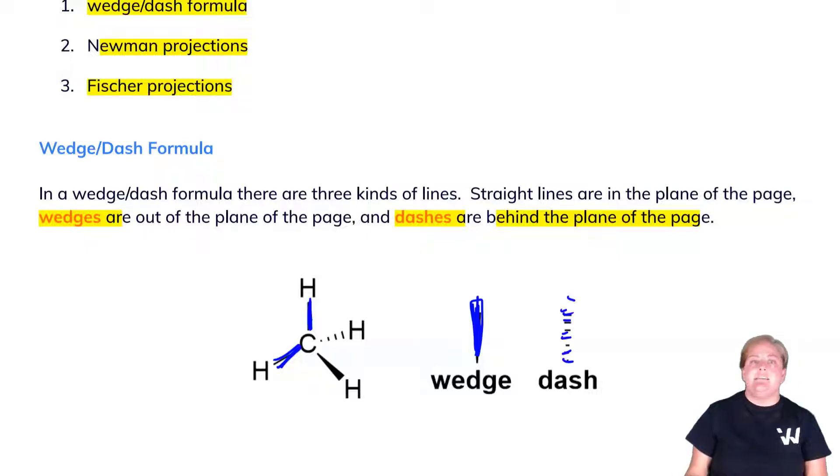This allows us to use a two-dimensional medium, whether that's the computer screen you're looking at right now, a piece of paper in your textbook, or on a test or an assignment. It allows us to use this two-dimensional medium to communicate three-dimensional space by using the wedge out and the dash behind.